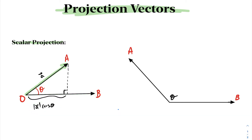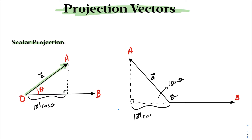A similar idea can be done for obtuse angles. Suppose we want to calculate the scalar projection of A onto B in this case. We drop this down and we're interested in calculating this length here — the projection of A onto B. The angle inside will be 180 minus theta. By definition, this length will be the magnitude of A times cos of (180 minus θ). As we know, cos(180 − θ) equals the cos of theta, so the form is unchanged. The scalar projection of A onto B is the same for both acute and obtuse angles.